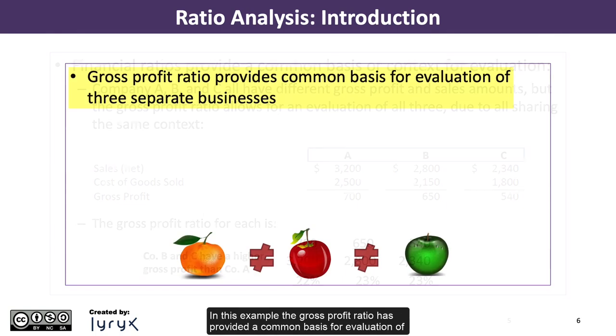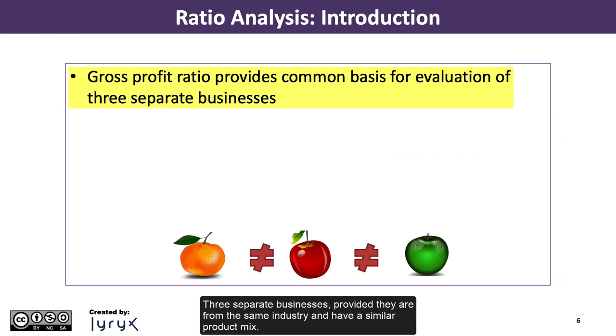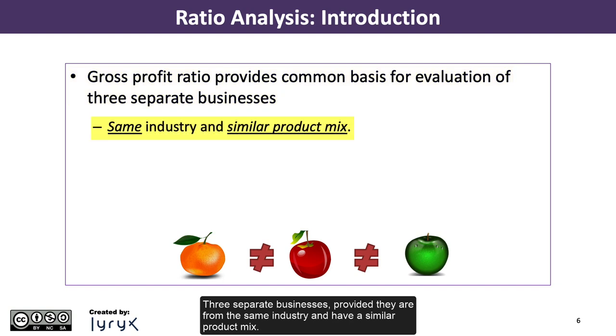In this example, the gross profit ratio has provided a common basis for evaluation of three separate businesses, provided they are from the same industry and have a similar product mix.